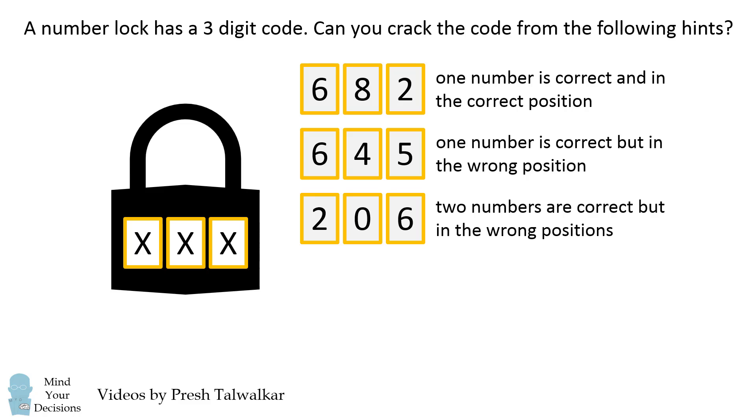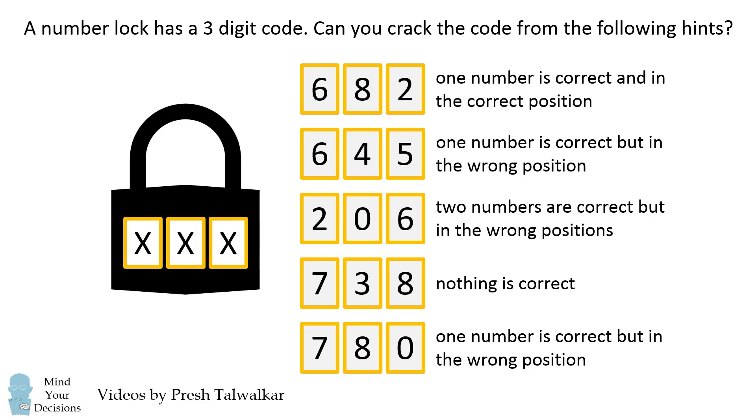206: Two numbers are correct, but in the wrong positions. 738: Nothing is correct. 780: One number is correct, but in the wrong position.